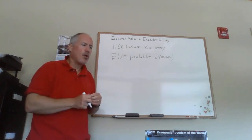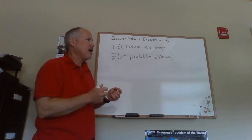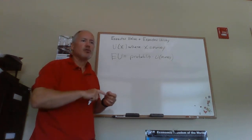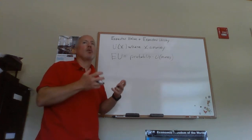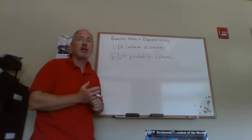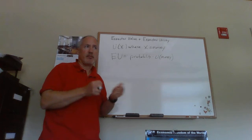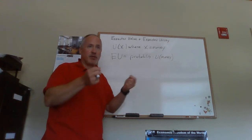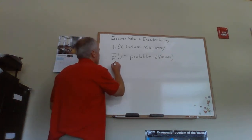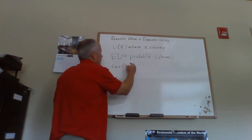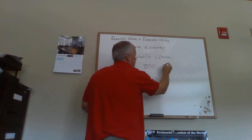There's an important difference from before. For expected utility, we need to know how much money or wealth a person has. So let's say you start with $1,000. You flip a coin: heads you win $200, tails you lose $200. That means you'll end up with either $800 or $1,200.